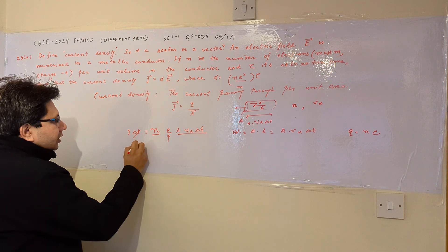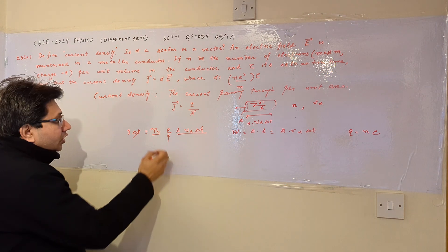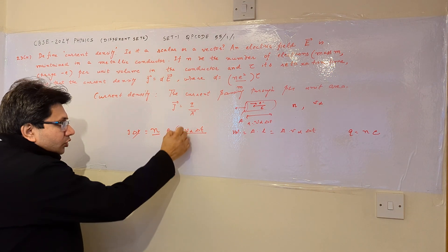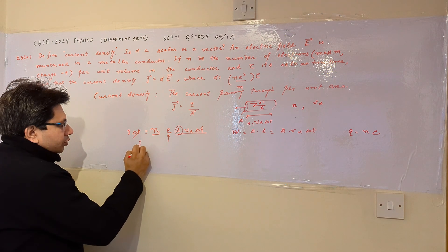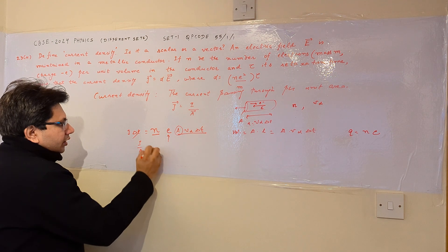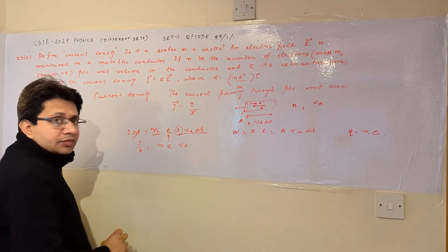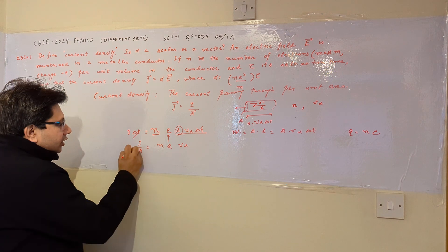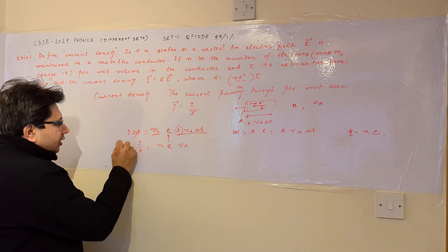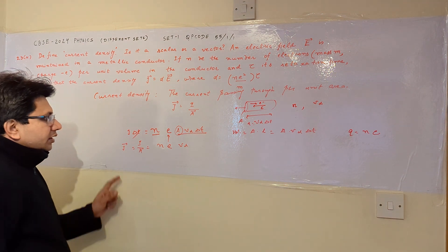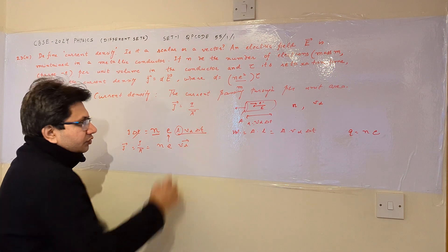The Δt cancels from both sides, giving i equals n·e·A·vd. Dividing both sides by A, we get i/A equals n·e·vd. Since i/A is the current density j, we have j equals n·e·vd.